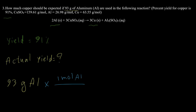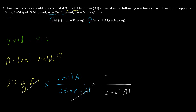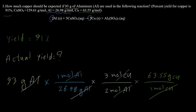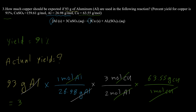First, I convert grams of aluminum to moles: 1 mole of aluminum is 26.98 grams. Based on the equation, 2 moles of aluminum equal 3 moles of copper. Then we convert moles of copper to grams using the molar mass of copper, which is 63.55 grams per mole. The final answer is 328.6 grams of copper — this is the theoretical yield.